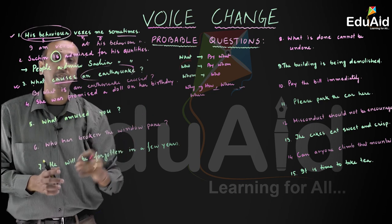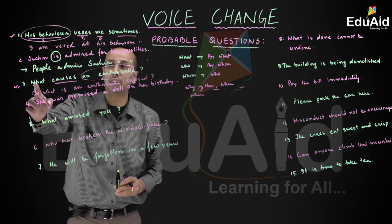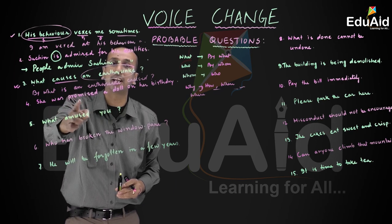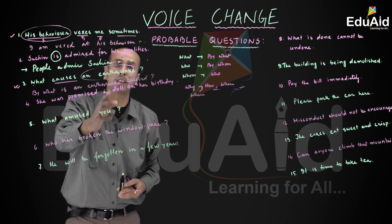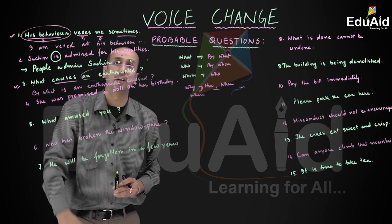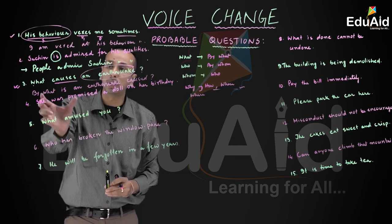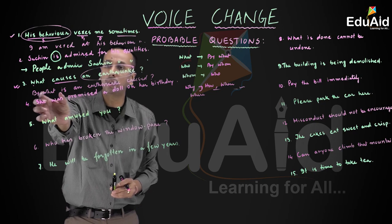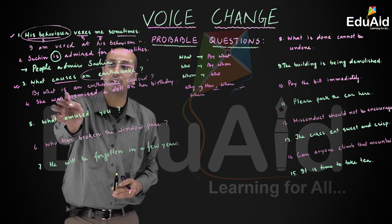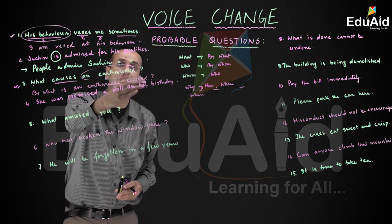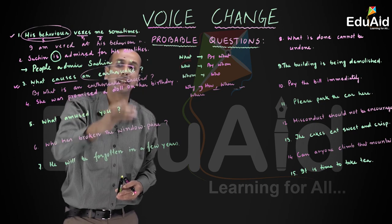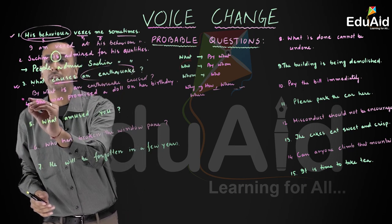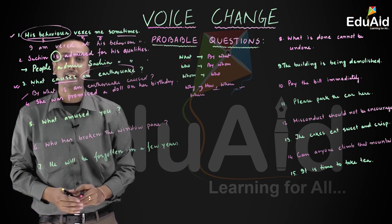Please do not make the mistake of writing 'By what an earthquake is caused' — the auxiliary verb must be retained immediately after 'by what' to maintain the interrogative structure. That is the answer to question number three.